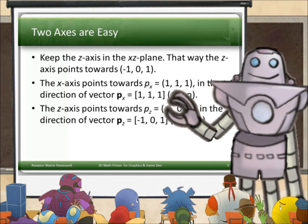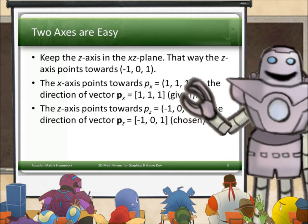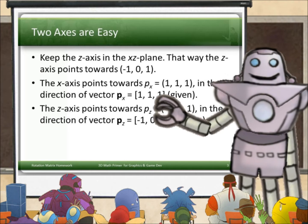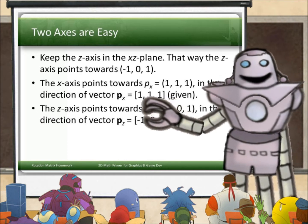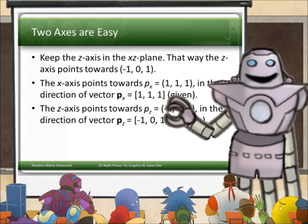Now, we already know that the x-axis points towards this point, p_x equals (1, 1, 1), which is in the direction of the vector p_x. Notice the bold face here meaning a vector equals (1, 1, 1). Now, we're given that.